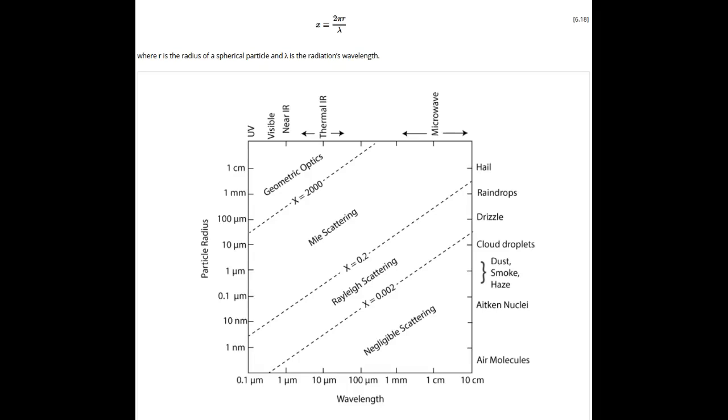Scattering is messy, so we will focus on just a few concepts that you can use. The first is the concept of size parameter, which is 2π times the molecule or particle radius divided by the radiation wavelength.